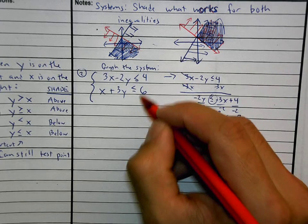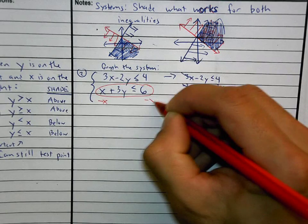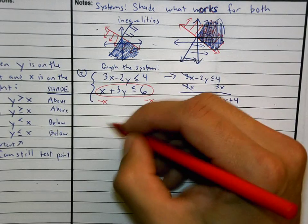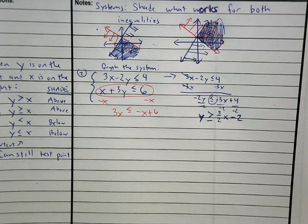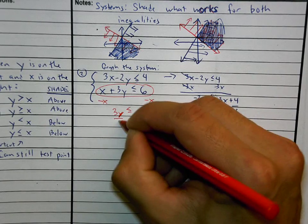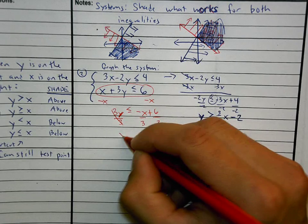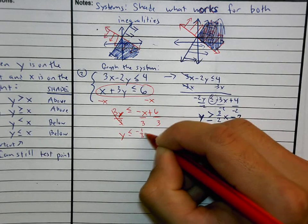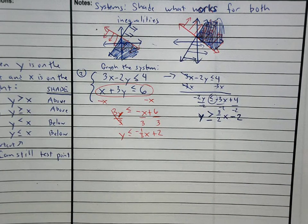Then go to the second equation and get it into slope-intercept form as well. Subtract x from both sides: 3y ≤ negative x plus 6. Then divide everything by 3, giving y ≤ negative (1/3)x plus 2. Once you have both equations in slope-intercept form, you can go to the graph.